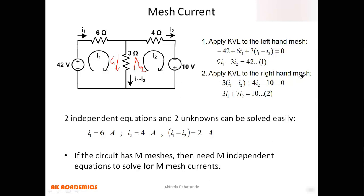Now we apply KVL to the right-hand mesh. The current through the three-ohm resistor is I1 minus I2, but since mesh two's current is going up and I1 is coming down, we write minus three(I1 minus I2). Continuing: plus four I2, and since the clockwise current traverses the 10-volt source from negative to positive, we write minus 10 equals zero. Rearranging gives minus three I1 plus seven I2 equals 10 — equation two.